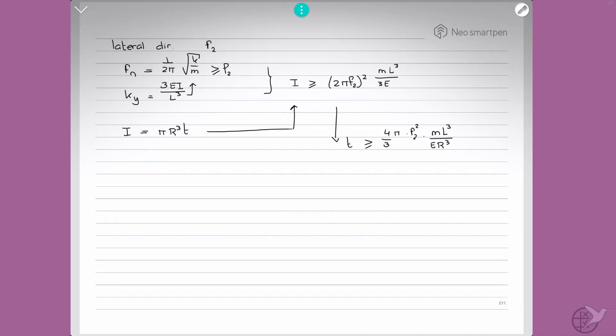Now, again substituting all the values. So F2 is equal to 10 hertz, M is still 2500 kilograms, L is 5 meters, R is 0.5 meters, and E is equal to 72 gigapascal. That gives that the minimum required wall thickness T2 in lateral direction must be larger than 0.015 meter or 15 millimeters.